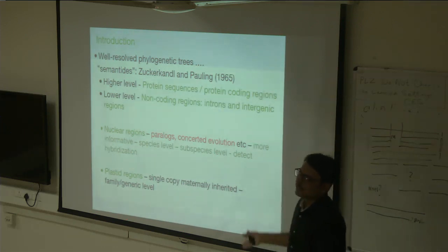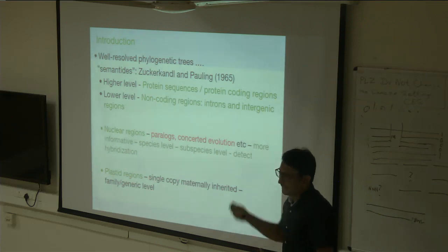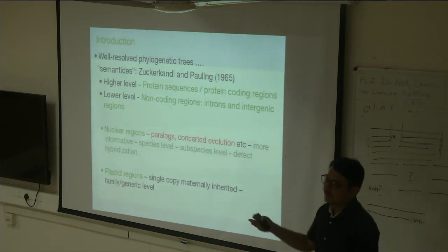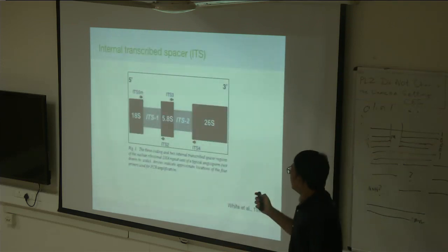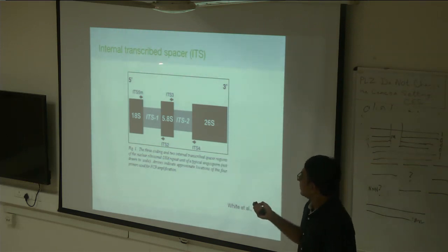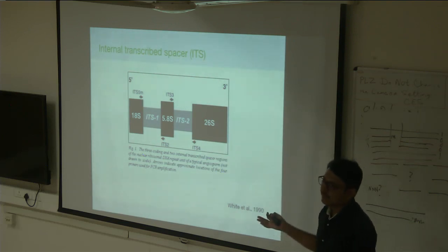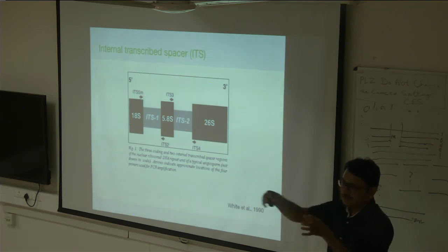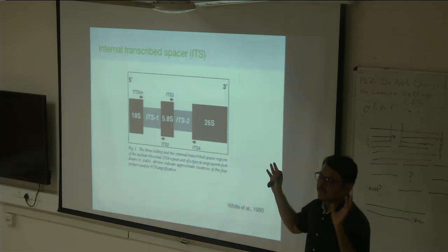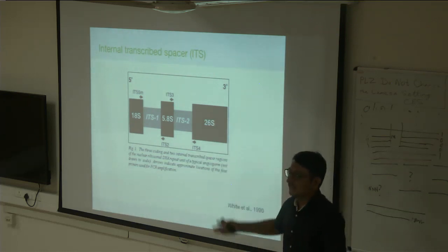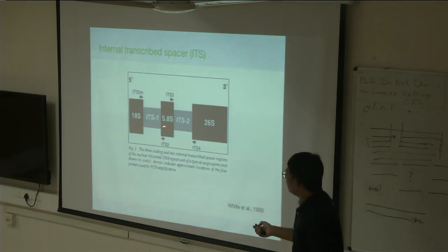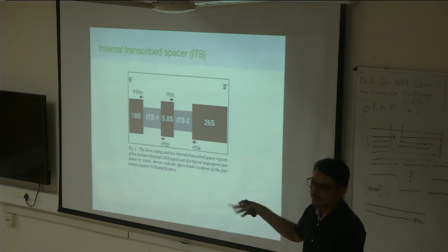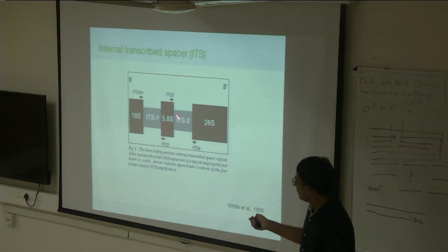Plastids have a big advantage for plants: they are single copy and maternally, uniparentally inherited. Hybridizations would not affect plastid markers and they can be used at multiple levels — family, species, and so on. The internal transcribed spacer, or ITS, is a very important nuclear marker. The ribosomal DNA is present in multiple tandem repeats, making it a high-copy gene. The ITS region between the 5.8S and 26S coding regions is transcribed but non-functional, so it is not under selection.